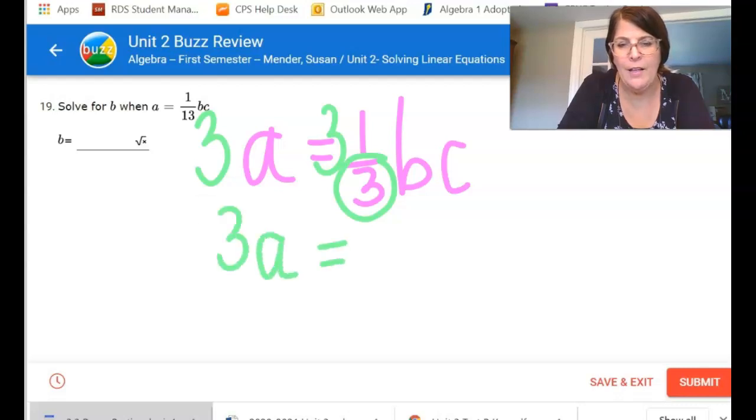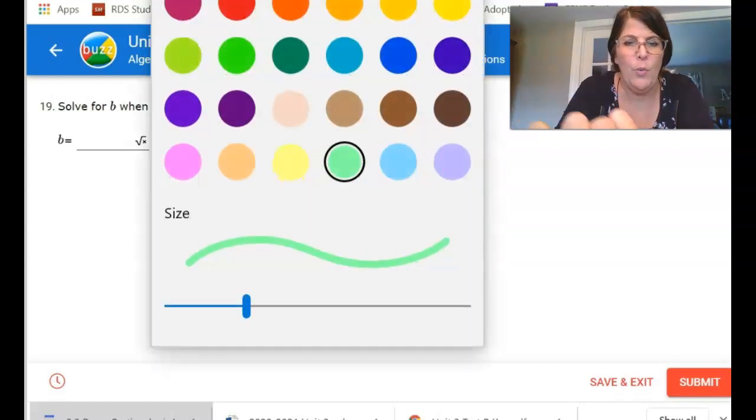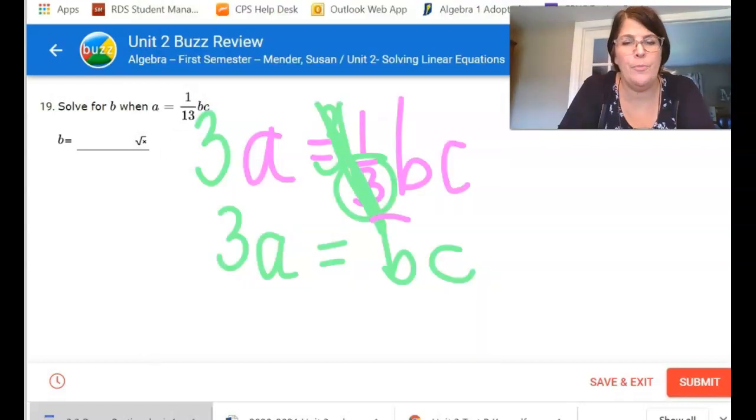On the left I'll have 3a, but on the right those threes they cancel and you have one BC or just B times C. We are trying to solve this for B. C is multiplied by it, so I undo that by dividing both sides by C.